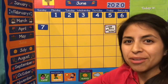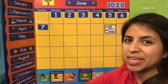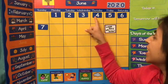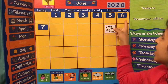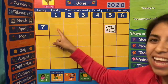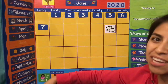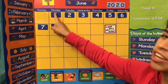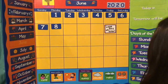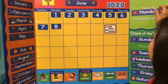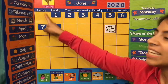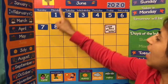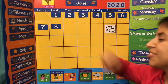For Morning Meeting, we're going to start by finding our missing number. Let's begin: 1, 2, 3, 4, 5, 6, 7, 8. Let's go ahead and put 8 up there. And as we're putting 8, we can see that it lands on a Monday. So we can put Monday on Today Is. And if today is Monday, yesterday was Sunday, and tomorrow will be Tuesday.